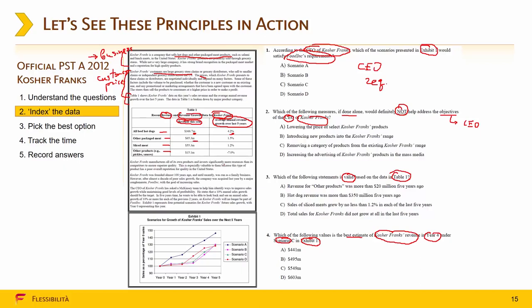Let's read the next paragraph now. Kosher Franks manufactures all of its own products and invests significantly more resources than its competitors. Okay, so this is about competition, competition and reputation and brand. The next paragraph: Kosher Franks was founded almost 100 years ago and until recently was a family business. However, the company was acquired last year. Okay, so this is history. And then the last paragraph. Okay, the CEO of Kosher Franks, ways to improve sales, 10% annual sales growth. Okay, this is the goal of the CEO. And we remember that this is important for question 1 and question 2. So we will definitely go deeper into detail once we start solving those questions.